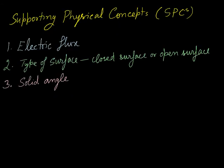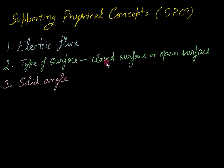As usual, I will discuss supporting physical concepts before I start the topic. The three supporting physical concepts included here are: number one, electric flux; number two, the type of surfaces — whether closed or open; and number three, the solid angle. These are the three key points of this lecture.